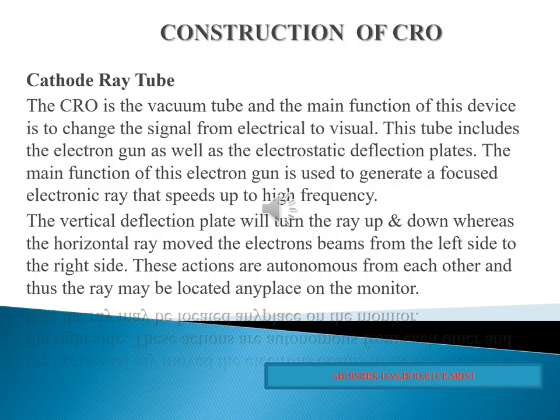The electron gun consists of an indirectly heated cathode, a control grid, an accelerating electrode, a focusing anode, and a final accelerating anode. These electrodes have a cylindrical shape and they are connected to the pins on the base. The name electron gun originates from the analogy between the motion of an electron emitted from the CRT gun structure and that of a bullet fired from a gun.